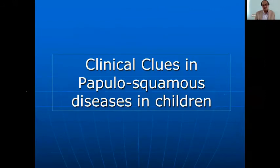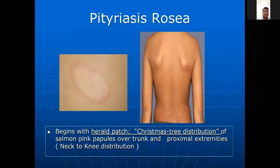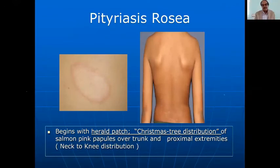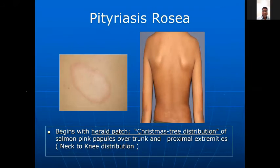Coming to other common conditions — pityriasis rosea is very common. It begins with a herald patch and then there is a Christmas tree distribution of salmon-pink papules on the trunk and proximal distribution. Diagnosis: lesions are neck to knee only. It occurs more frequently in spring and resolves spontaneously within six to eight weeks.